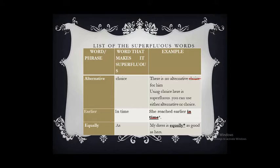'Equally as' — equally means in the same way or same manner. Since 'equally' and 'as' have the same meaning — equally means in the same manner and 'as' means in the same way — both should not be used together. The correct form is: 'My dress is as good as hers.'